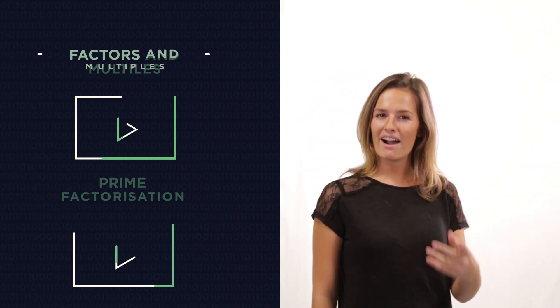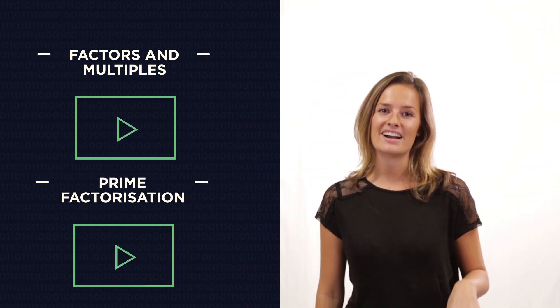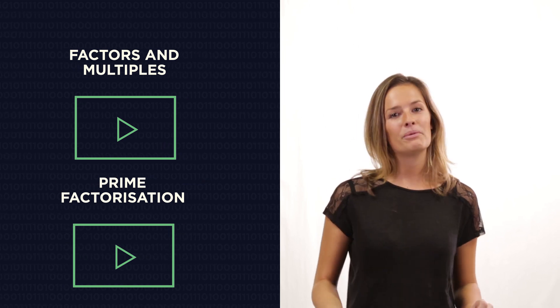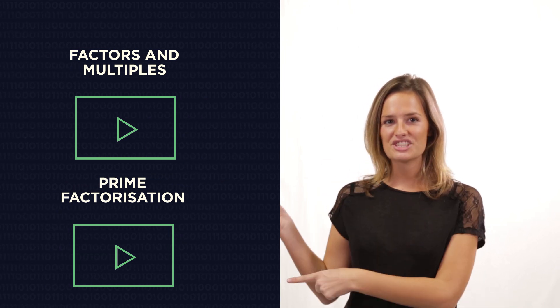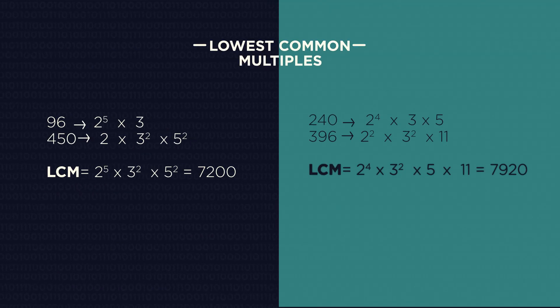We can use prime factorization to find the highest common factors and the lowest common multiples, even for really large numbers. Before we jump straight in with an example, if you aren't quite sure how to find prime factors, or want a factors and multiples recap, watch these two videos first. So let's start with the lowest common multiples.